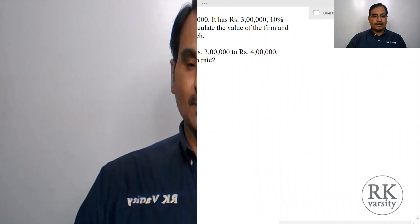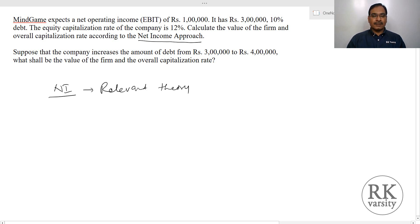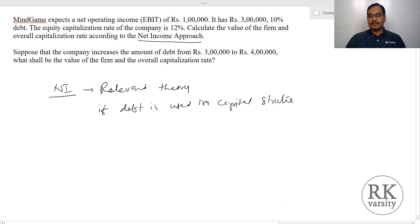Now I will explain this concept with an example. Using the values given, you need to calculate the value of a firm using the net income approach. The net income approach, also called the relevant theory, advocates that if debt is used in capital structure, two things will happen.